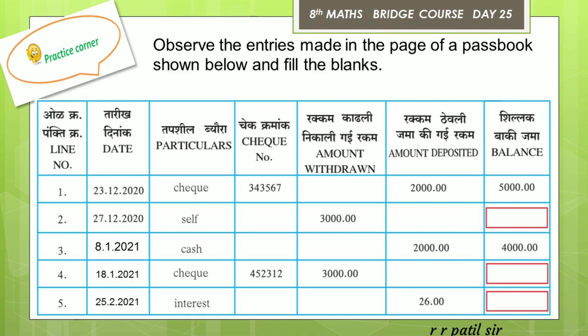Then let us see the third entry — it is at 8th January 2021. For the 8th January entry, we have a cash payment of 2,000. So total becomes 4,000. Then the fourth entry is due to a cheque on 18th January — we have to pay 3,000 rupees by cheque. What is the balance? 4,000 minus 3,000.